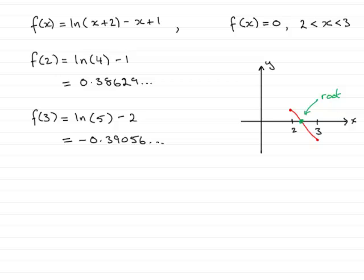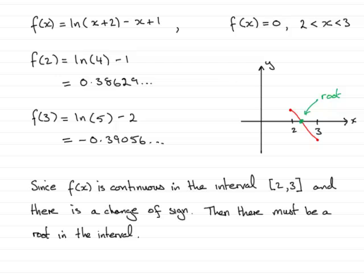So to finish this, what you need to do is write a statement in, which I've just done earlier. I've said that since f(x) is continuous in this interval, 2 to 3, there are no breaks in other words, and there is a change of sign, we've gone in this case from a plus to a minus, then there must be a root in the interval.